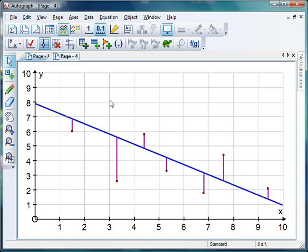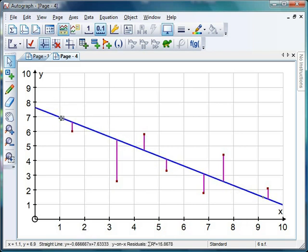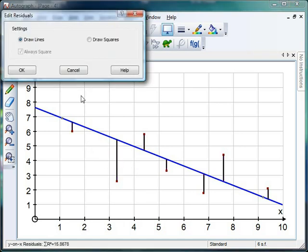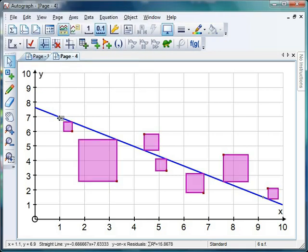But then we can go further than that and we can say well some of them are below the line and so we're going to have a negative value and some are above the line and we're going to have a positive value. And we don't want those kind of cancelling each other out. So what we actually do instead is square those values. And once again Autograph can show this really really nicely. So if I double click on it and instead of having draw lines have draw squares and click OK then I get the squares there.